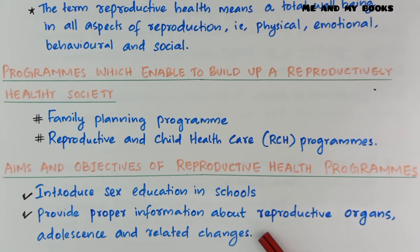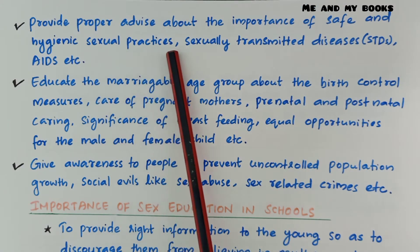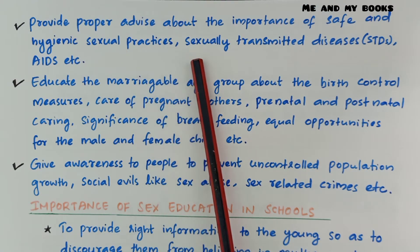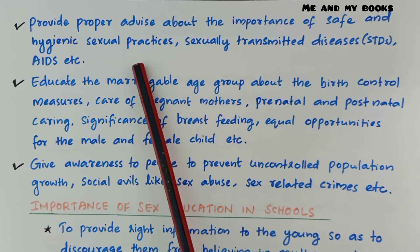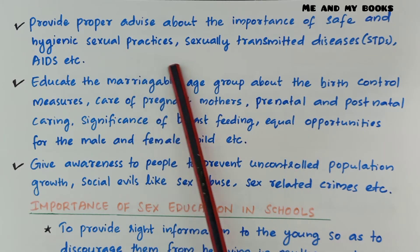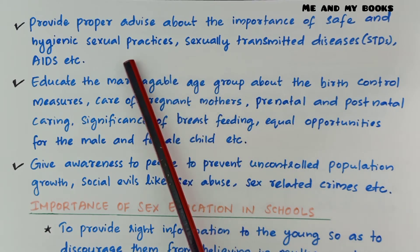Many changes take place during adolescence, like physical changes, sound changes, and changes in hormone production. Another aim is to provide proper advice about the importance of safe and hygienic sexual practices, sexually transmitted diseases or STDs, AIDS, etc.